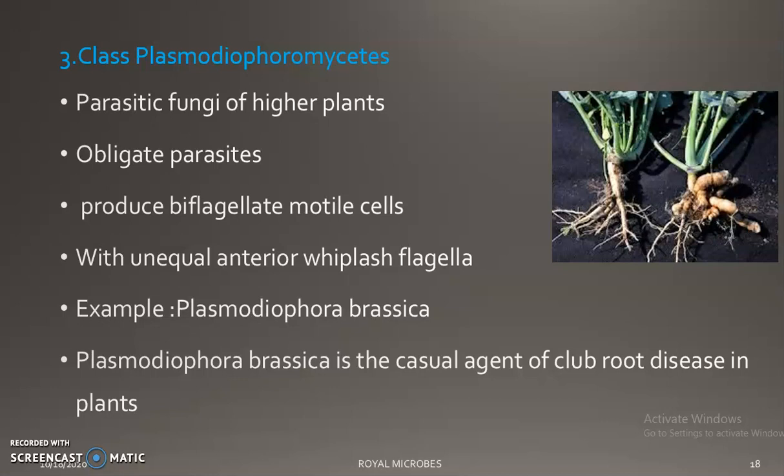The third class, Plasmodiophoromycetes, includes mainly parasitic fungi of higher plants. They are obligate parasites — strict parasites that require a host for completing their life cycle. They produce biflagellate motile cells; the flagella are whiplash type and unequal in length — one short and one long — and placed anteriorly.